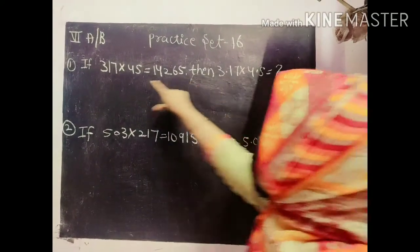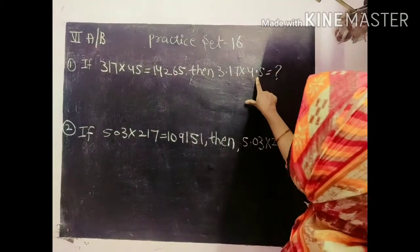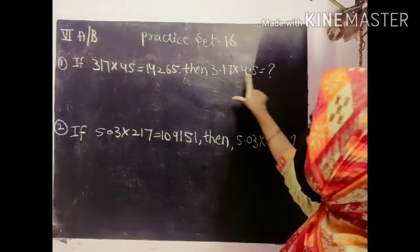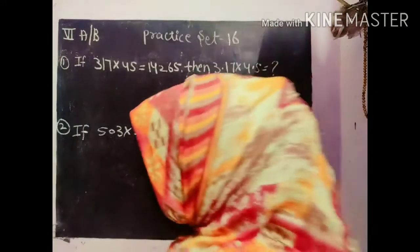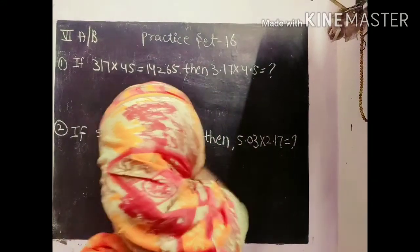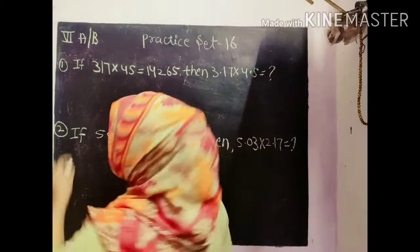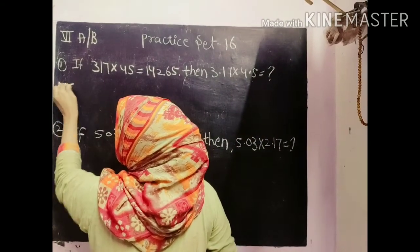So what will happen? The same question is here but point has been added which means these questions have been converted into decimal form. So what will be the answer? So here we can easily find out what will be the answer.